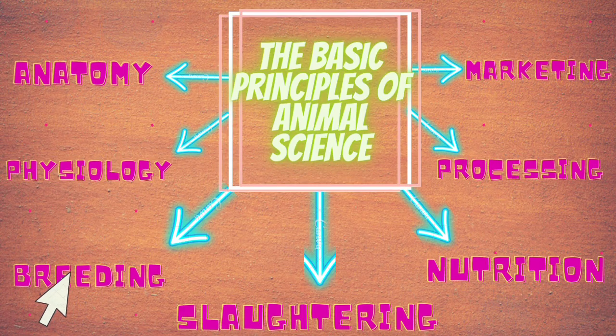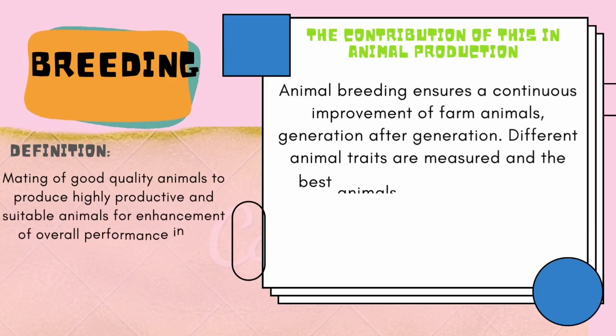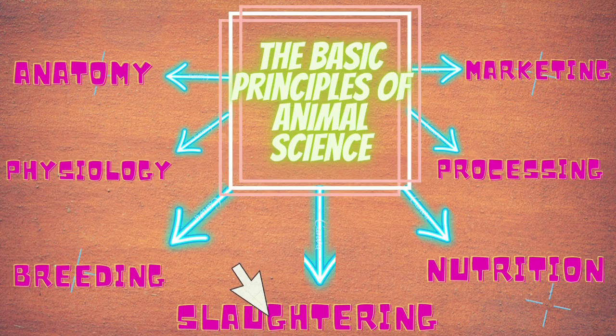The third principle is breeding. Breeding is the mating of good quality animals to produce highly productive and suitable animals for enhancement of overall performance in a subsequent generation, and to augment production and profitability in terms of animal breeding. Animal breeding ensures a continuous improvement of farm animals, generation after generation. Different animal traits are measured and the best animals are used as parent animals, providing livestock farmers with the next generation of good animals.